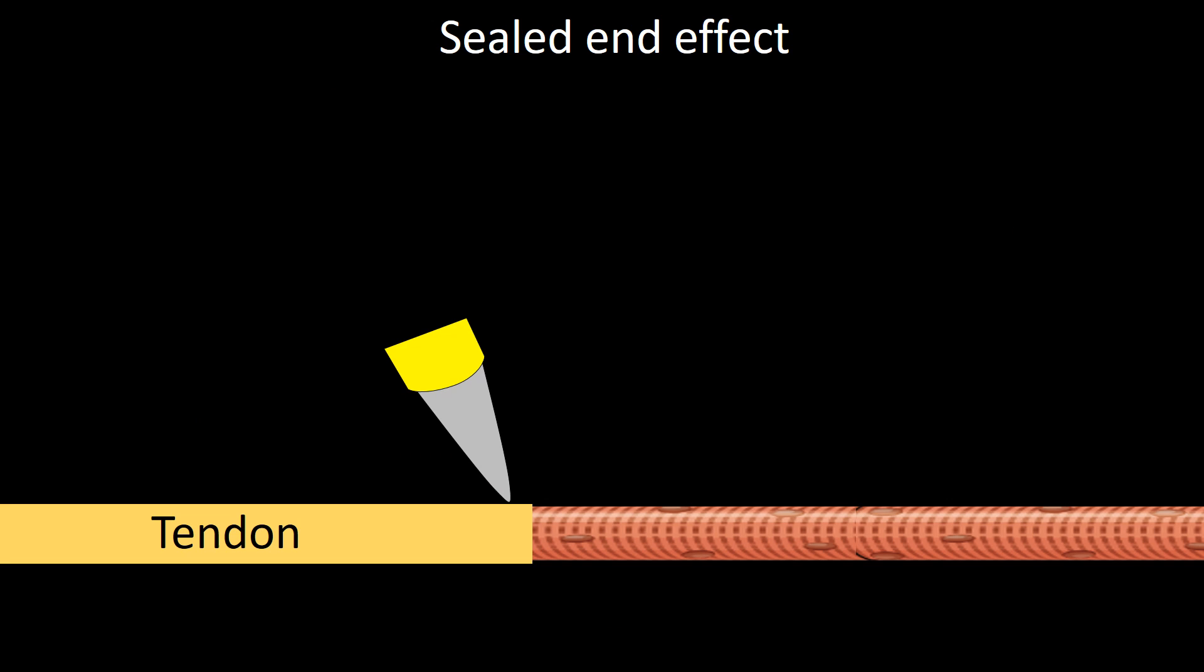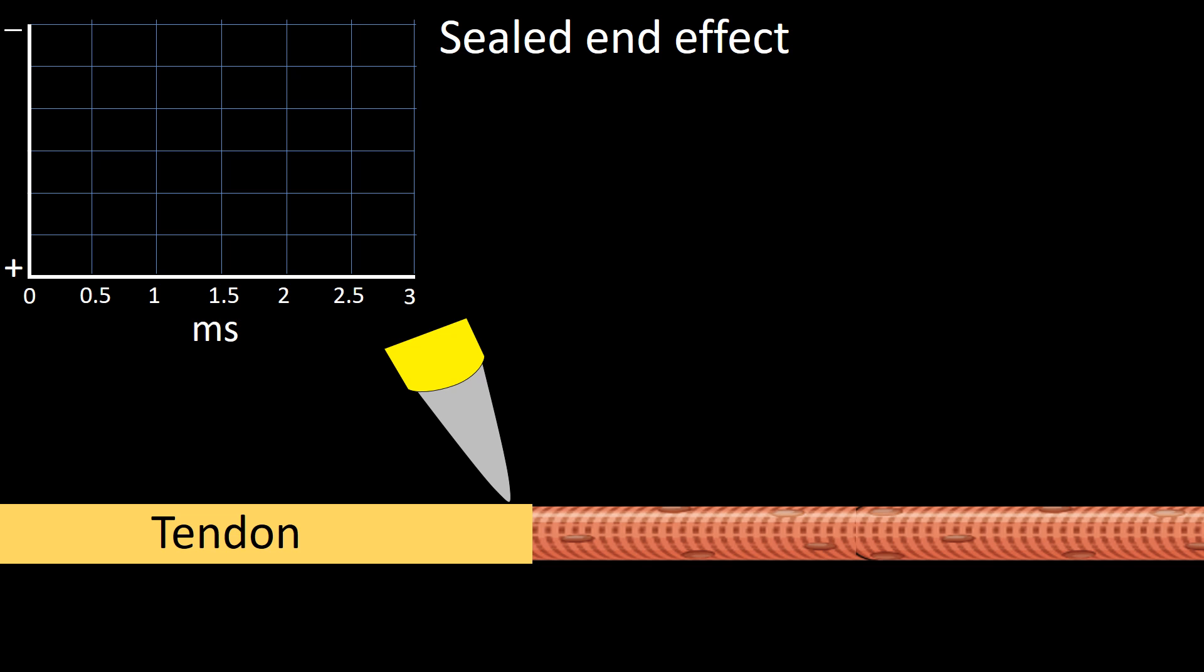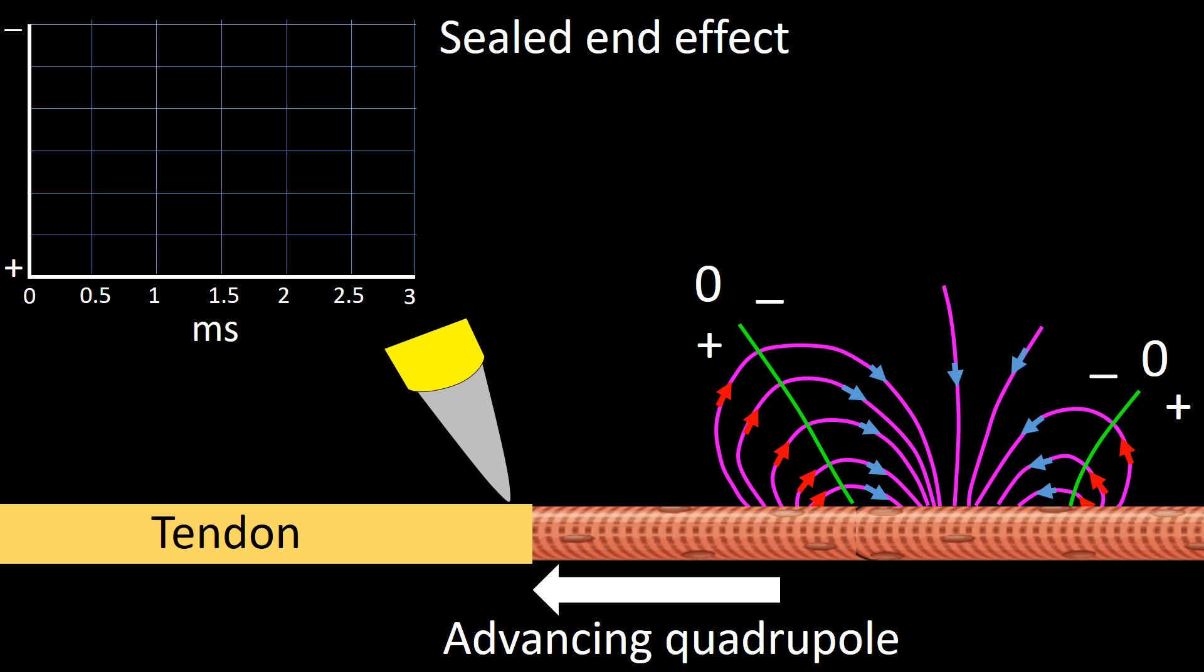In this figure, I am representing an electrode tip abutting the tendon side of the musculotendinous junction, a display panel, and an advancing quadrupole. I will now explain a muscle fiber action potential propagation interaction with a tendon and its termination. This is a continuous process, but for the sake of explaining it, I will divide it into six stages.